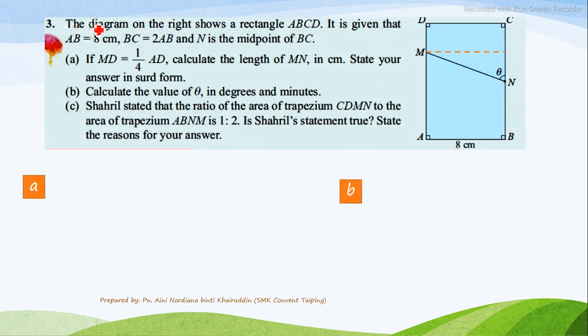Question number 3. The diagram on the right shows rectangle ABCD. It is given that AB equals to 8. BC equals to 2AB, so BC equals to 16. And N is the midpoint of BC, so it's actually 8, 8 cm. If MD equals to 1 over 4 AD, as we know AD is 16, so 1 over 4 AD, 1 over 4 times 16 equals to 4. So the length of DM or MD equals to 4 cm, while the length of AM equals to 12 cm.